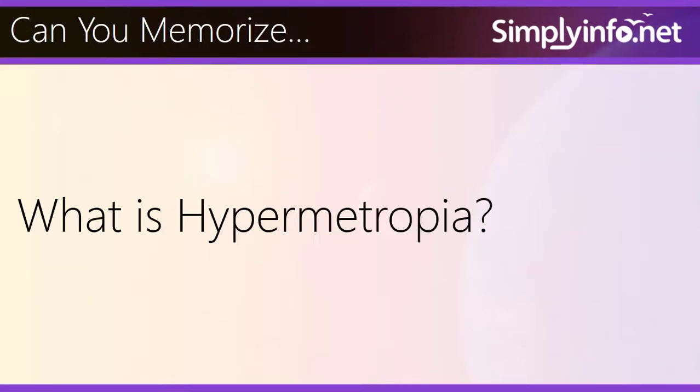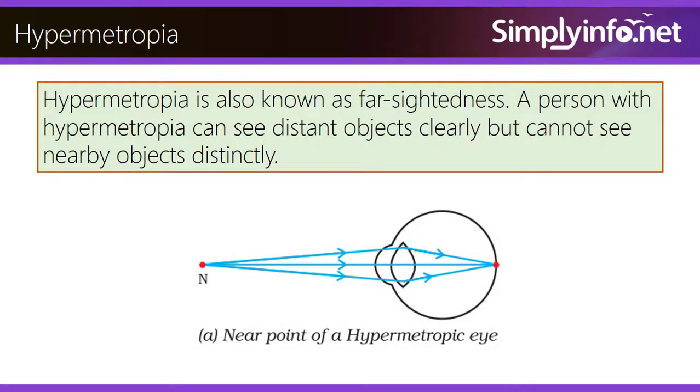Can you memorize what is hypermetropia? Hypermetropia is also known as farsightedness. A person with hypermetropia can see distant objects clearly but cannot see nearby objects distinctly.